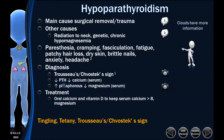A decreased parathyroid hormone decreases your serum calcium, and an increased parathyroid hormone increases your serum calcium. Remember parathyroid and calcium — they go together. Low parathyroid means low calcium. So everything we're going to talk about regarding our patient's presentation and your question is going to relate to a hypocalcemic state, and we're talking about serum calcium.